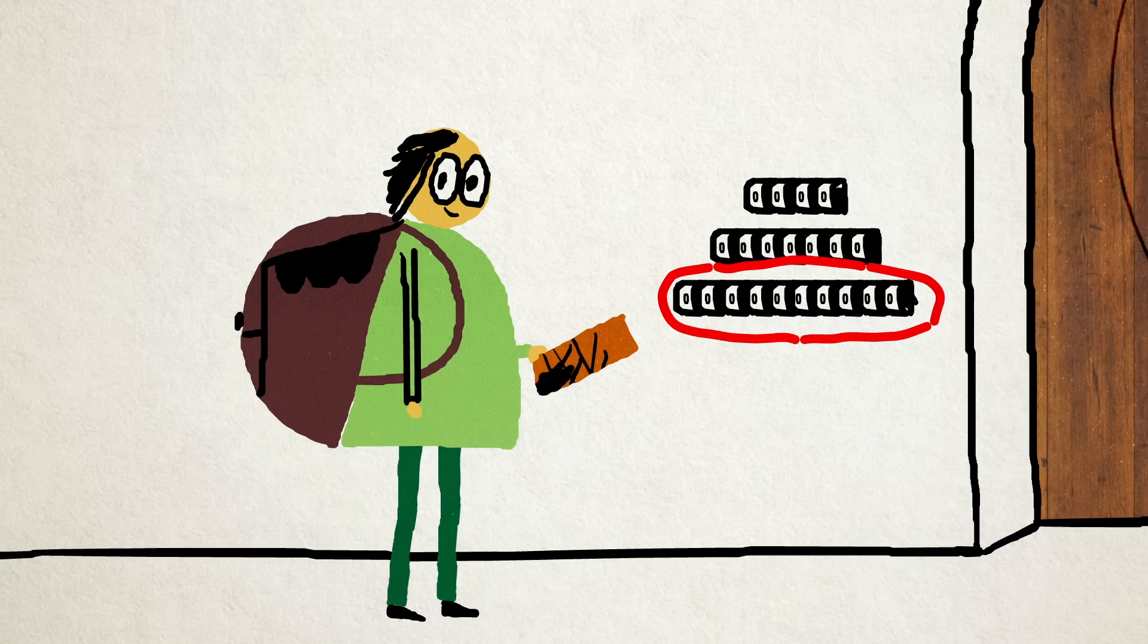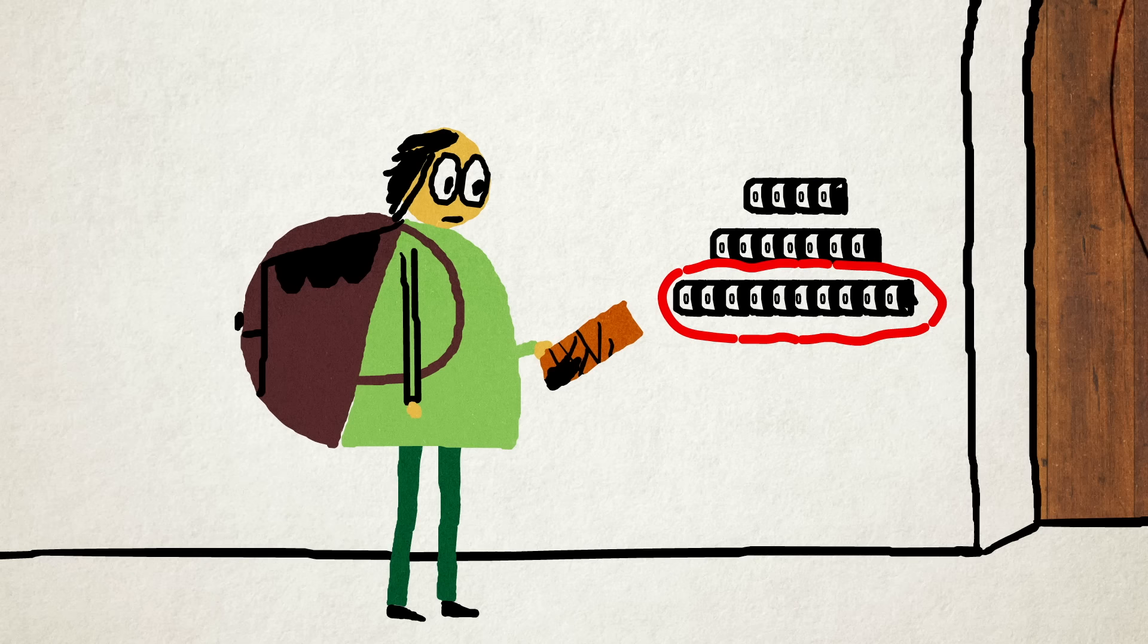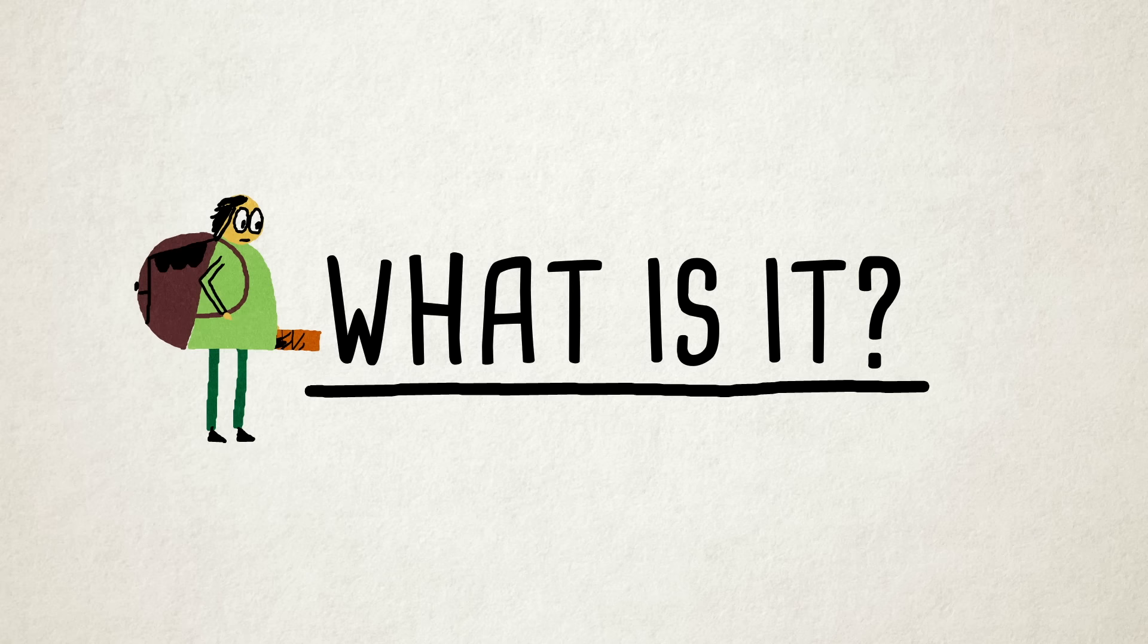The last lock takes a 10-digit number, and it just so happens that there's exactly one 10-digit autobiographical number. What is it?